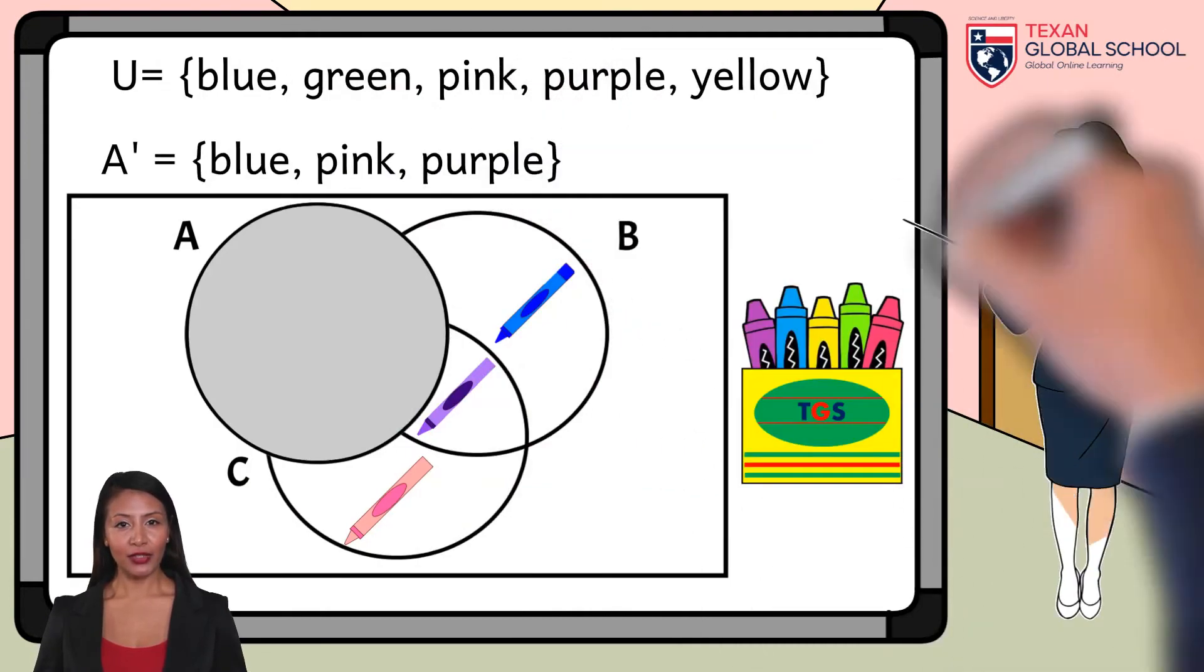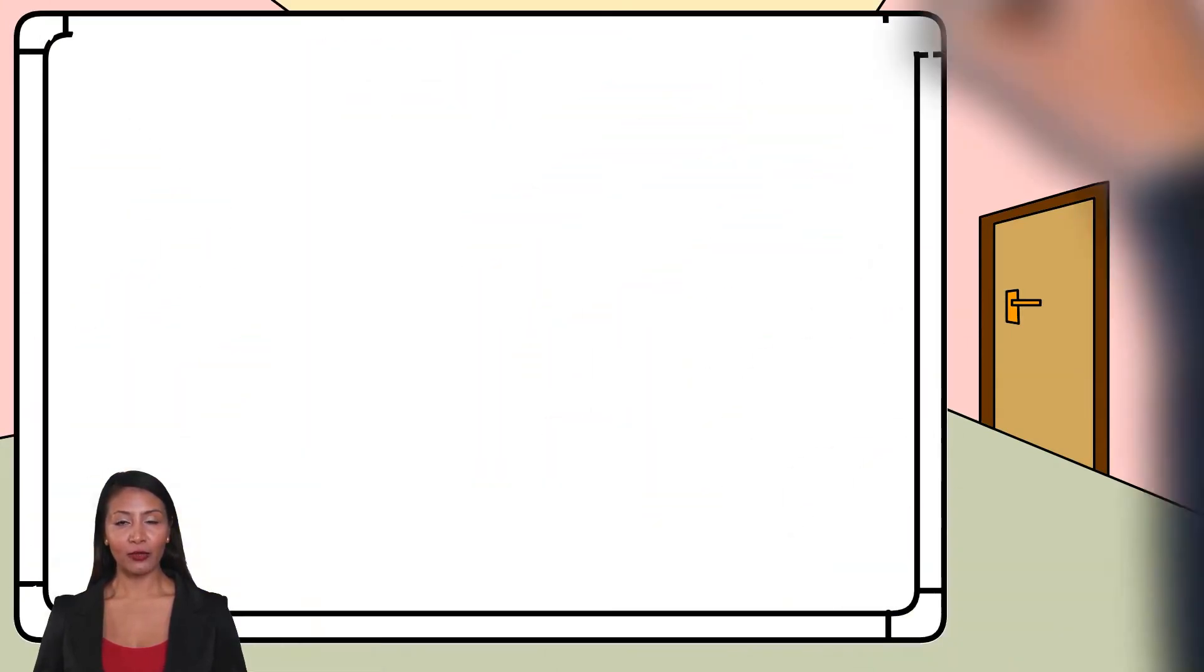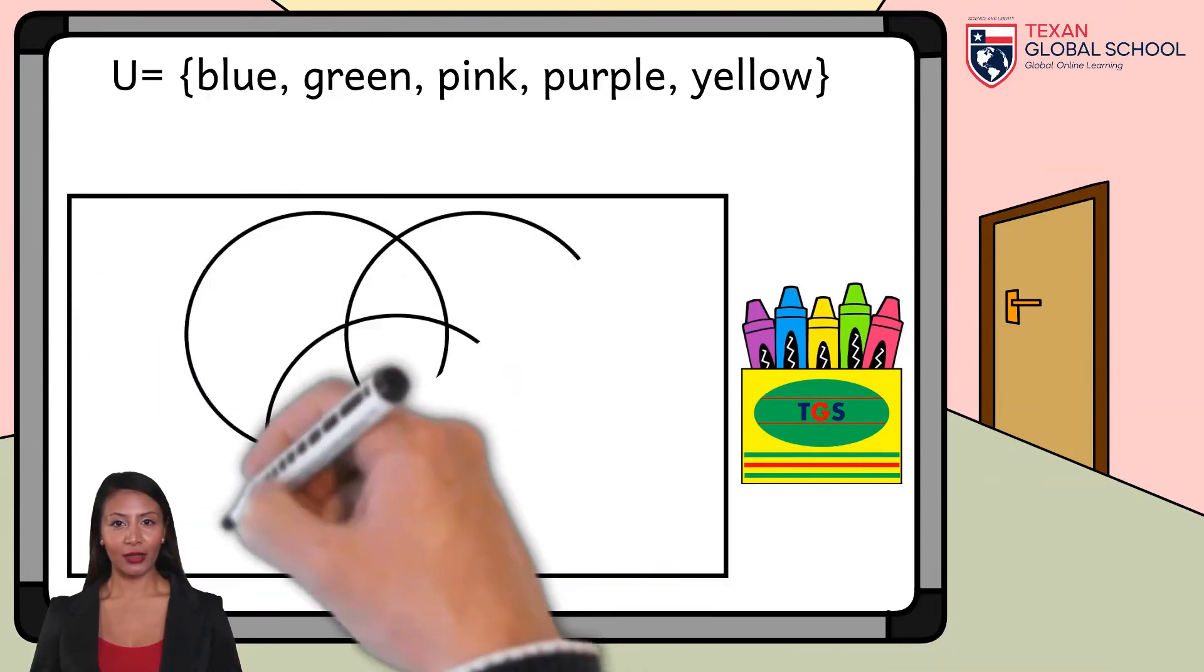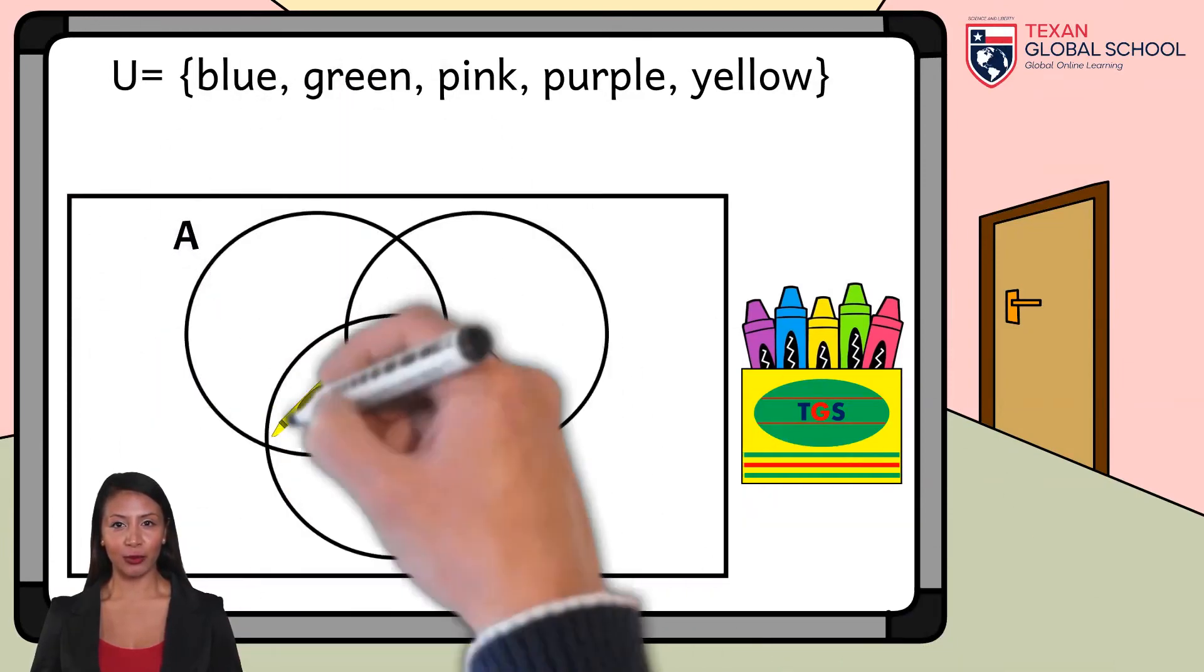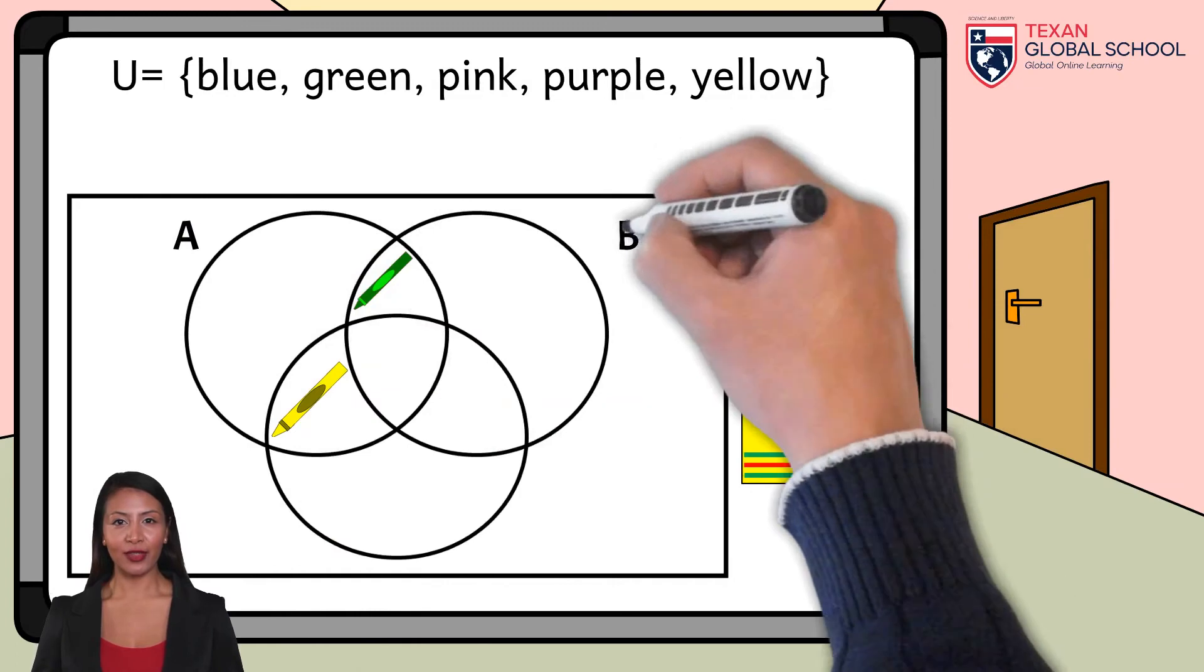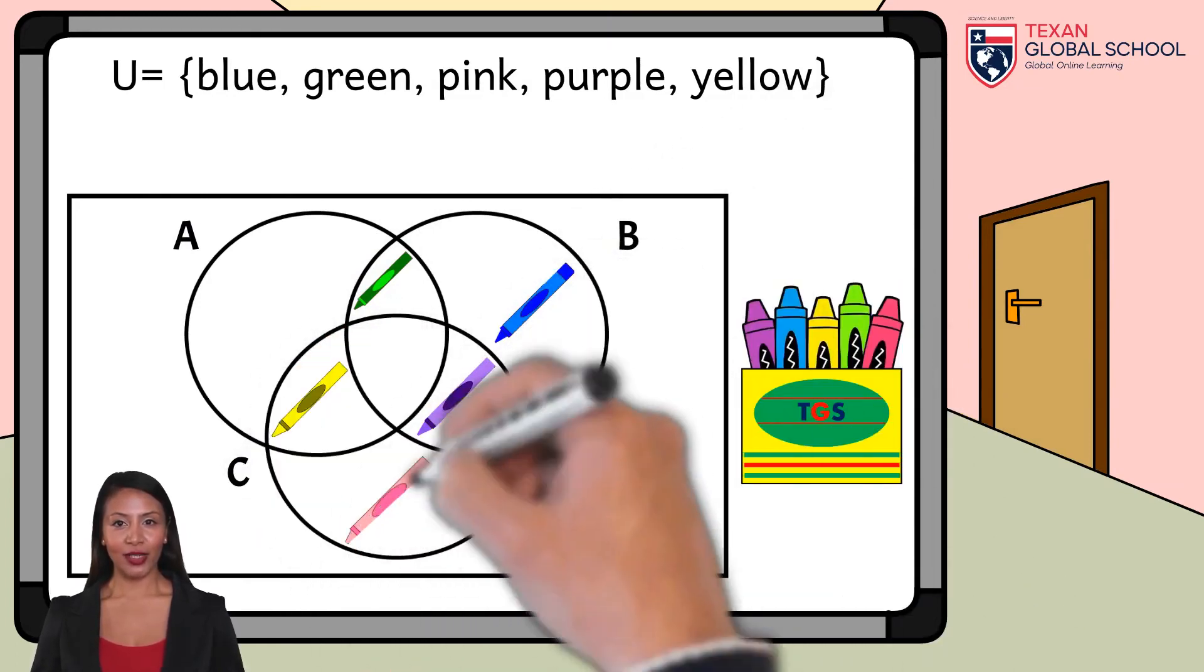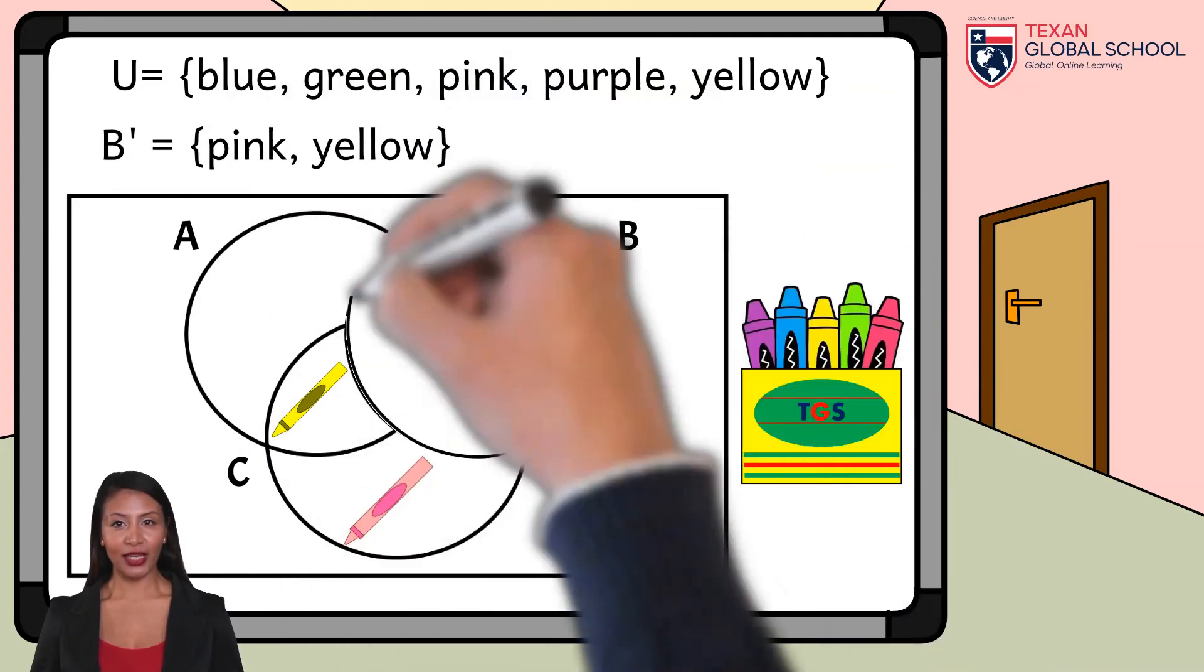In the same way, we can obtain the complement of Set B. From the Venn-Euler diagram, we cover Set B to determine those missing elements to complete the universal set. It can also be analyzed directly from the Set Notation by comparing the missing elements to complete the universal set. As a result, the items outside of B, or those to complete the universe, are the pink and yellow crayons.